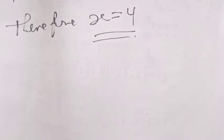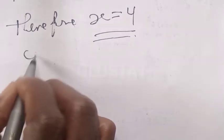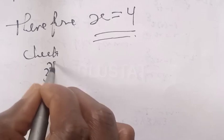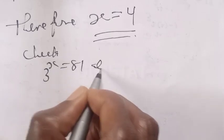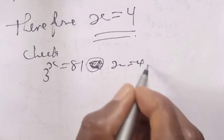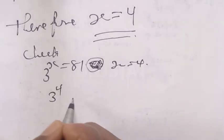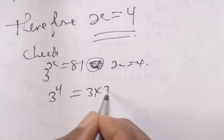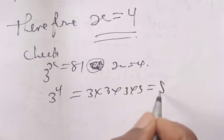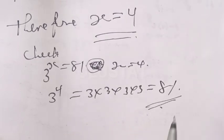Let's check: 3 raised to power s is equal to 81. At s equals 4, 3 raised to power 4 is 3 times 3 times 3 times 3, which equals 81. Our answer is correct. Please don't forget to like, share, comment, and subscribe. Thank you.